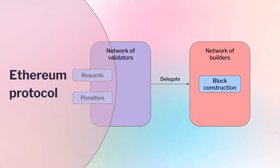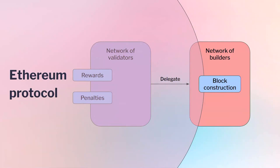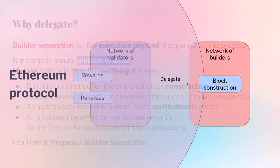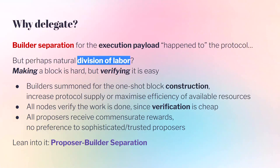Where do we draw the boundary of the Ethereum protocol? Today validators are delegating block construction to builders. Should we push the boundary of the protocol so it recognizes builders — people participating in our protocol who should be entrenched as part of the enterprise? The first question is why delegate at all. What is the opportunity in having this separation? The first type is execution payload separation — packing transactions — which happened organically, which is why it's out of protocol. That's how MEV-Boost emerged: we didn't design for it, it just happened.